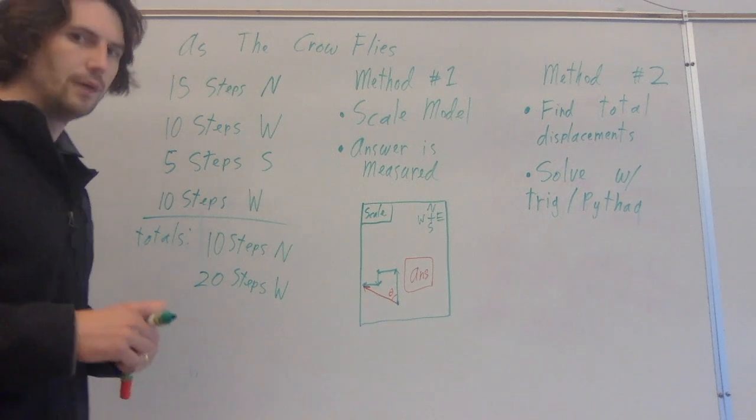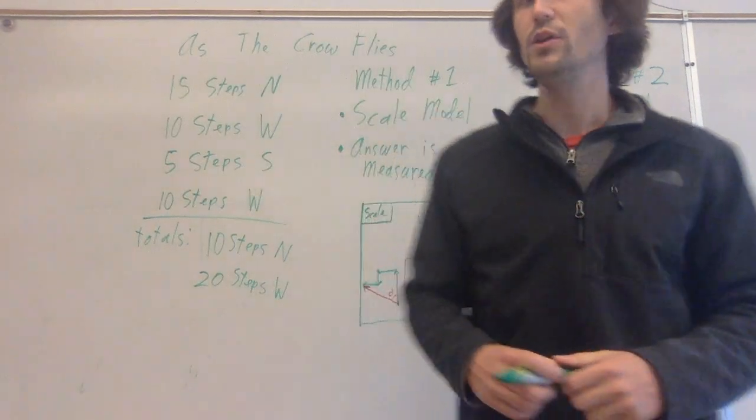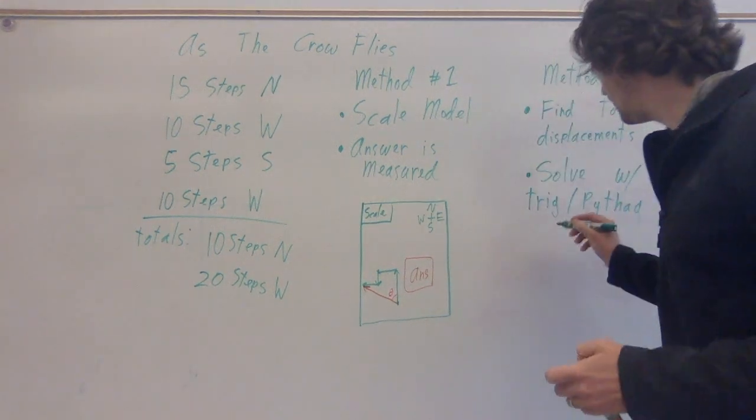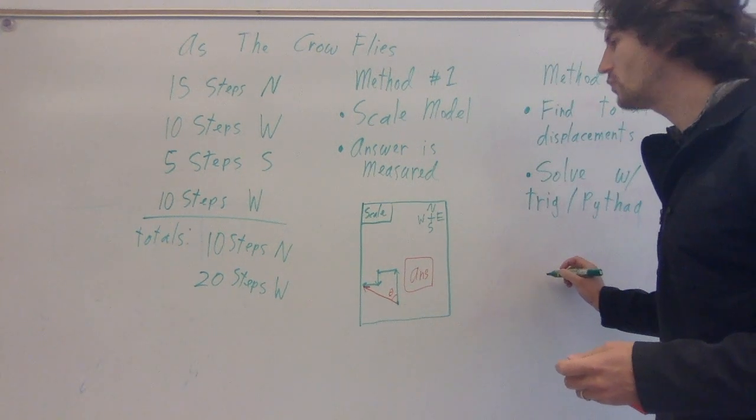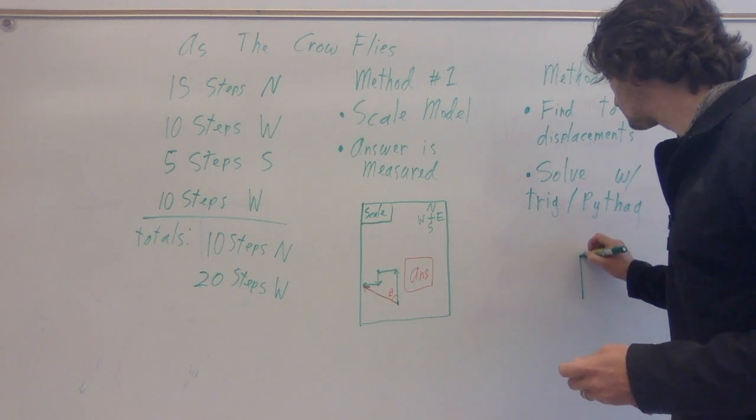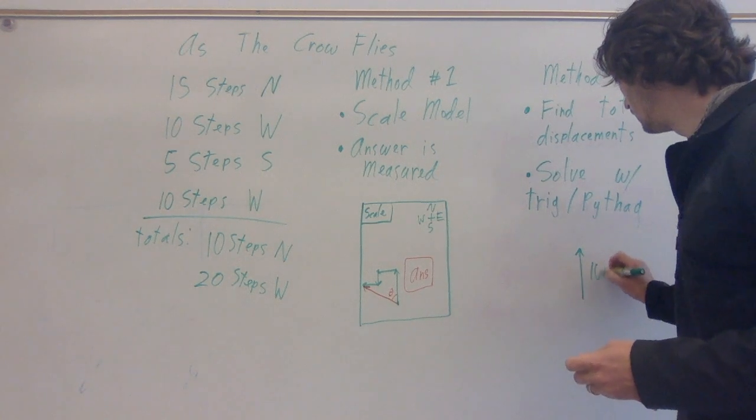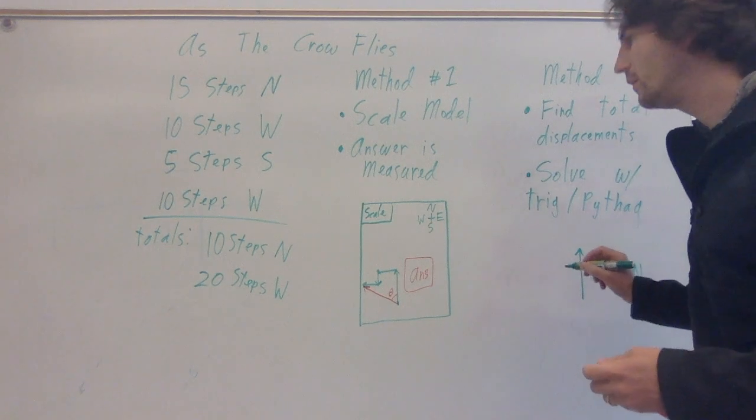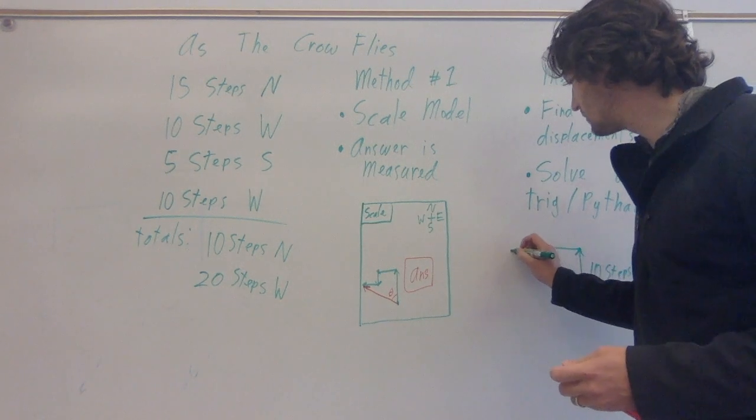Now I have these on another sheet of paper. You can use the back of the graph paper if you want. If you want to use regular white paper, that's also fine. You are going to just draw something that represents 10 steps north.